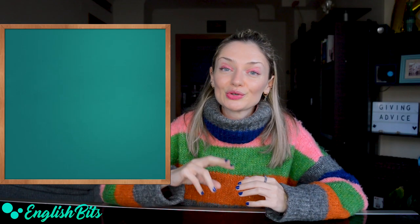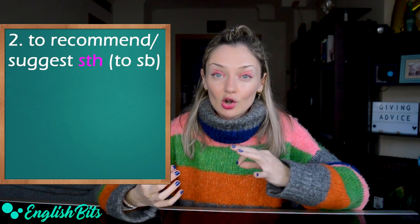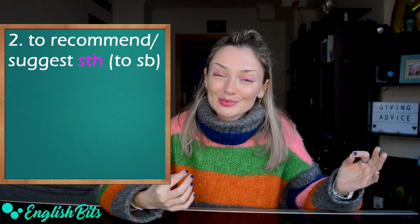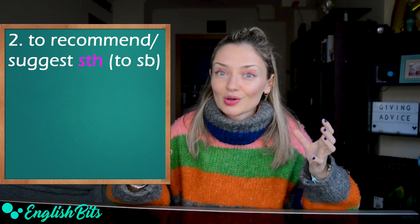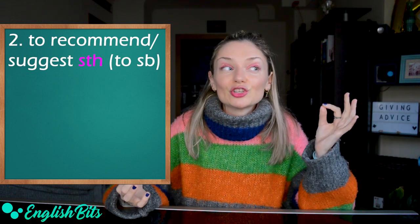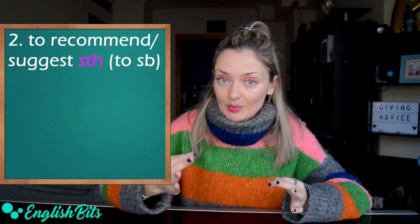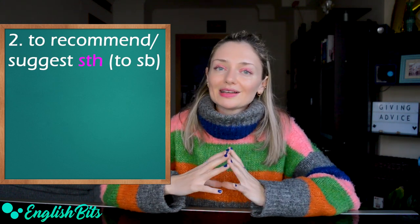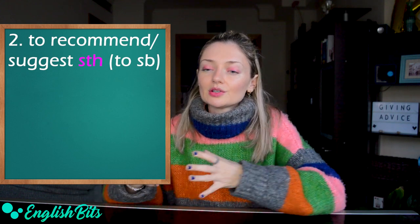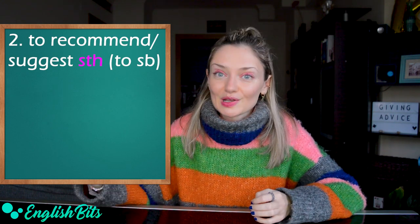Now let's move on to the second option, which is to use a direct object after the verbs to recommend and to suggest. So we can say to recommend or to suggest something. And if you want, you can also add 'to someone' — to recommend or to suggest something to someone.